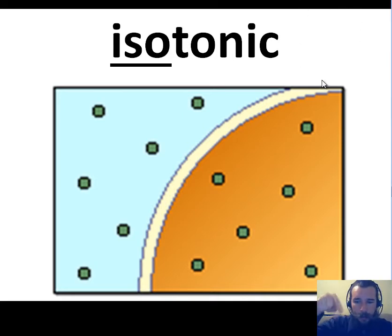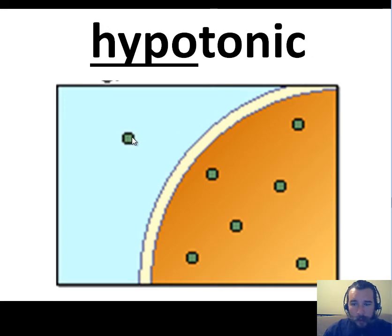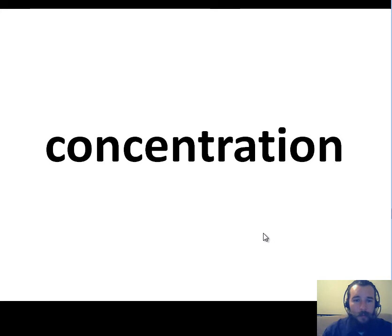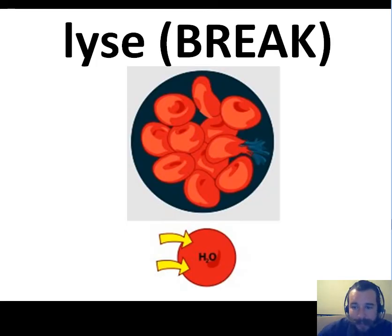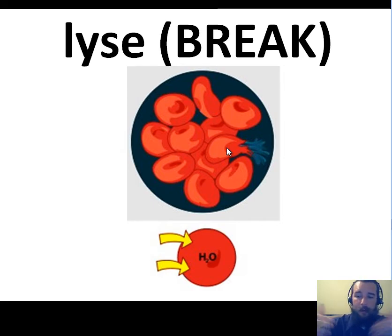If animal cells are placed in a lower concentration, hypotonic solution, water will enter the cell to balance the concentration. The water enters the cell to dilute and even out the concentration. As a result, the cell will burst — it will lyse, which is the word for break or burst. The cell fills up with water and pops. This may have happened while looking at cheek cells under the microscope lab — you look back and your cell is gone because it took on too much water in that hypotonic solution and lysed.